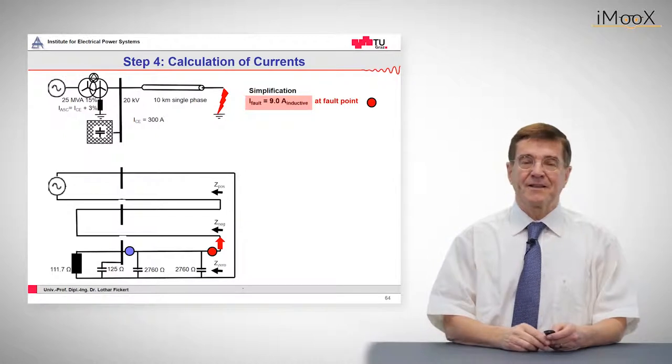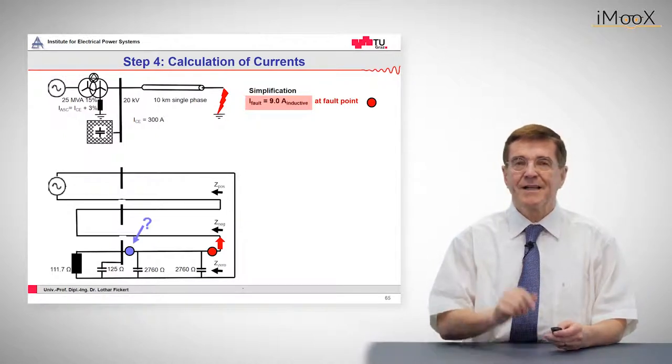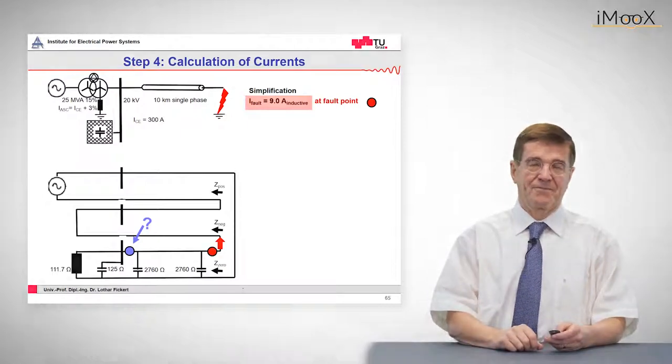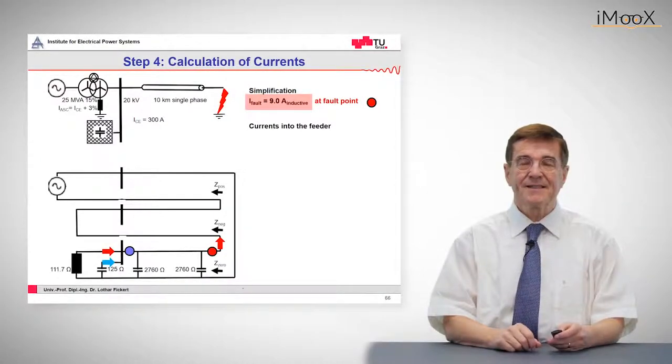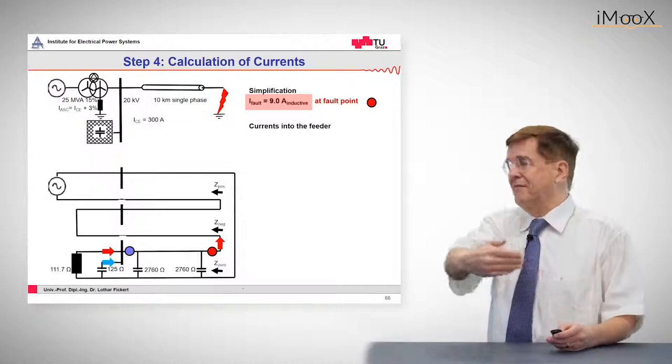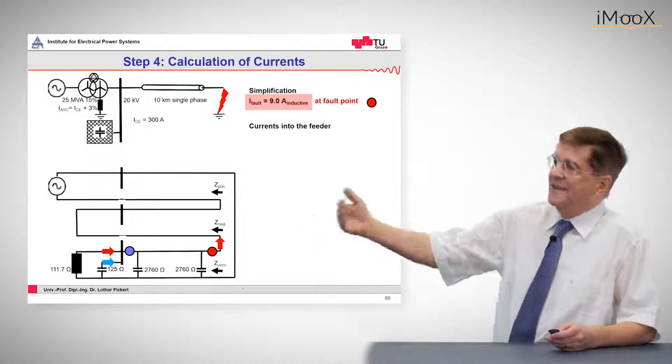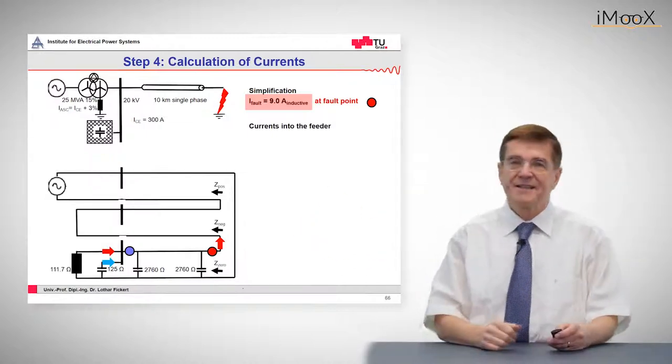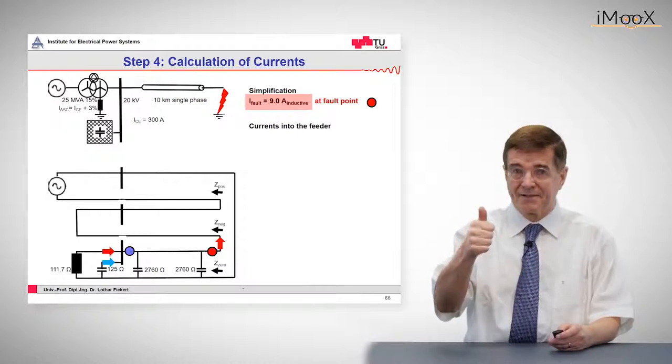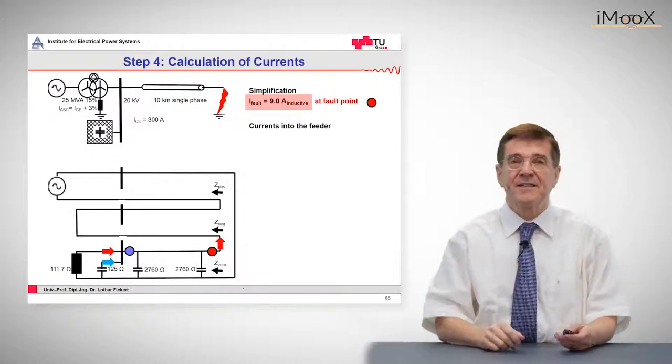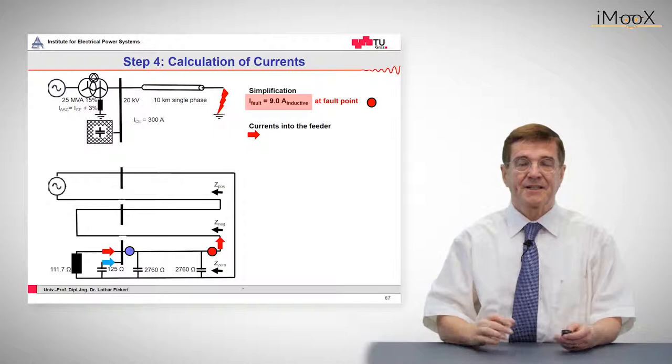Now let's see what happens at the fault point. That was the 9 amps. And now what is the relay given? So the relay sees the currents that are fed from the left side into the feeder. That is on one side the inductive current, on the other side it's the residual capacitive current. And they are calculated here.